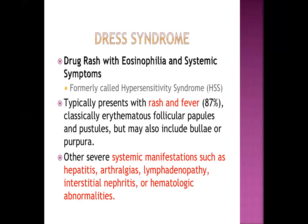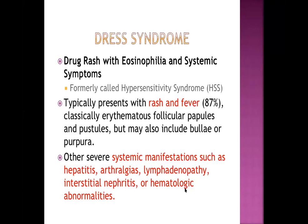DRESS syndrome typically presents with rash and fever in 87% of cases. The rashes are mainly erythematous papules, sometimes pustules, and very rarely bullae or purpura. Other severe systemic manifestations include hepatitis, arthralgia, lymphadenopathy, interstitial nephritis involving the kidney, and hematological abnormalities possibly involving the bone marrow.